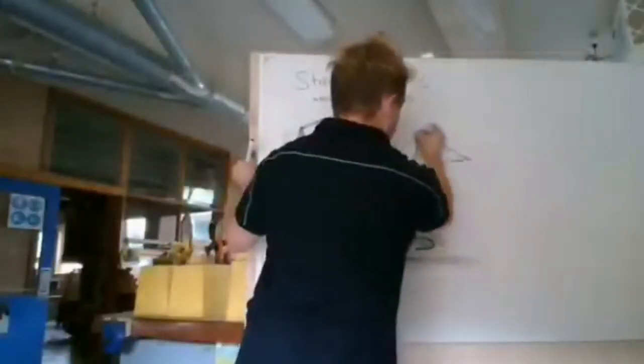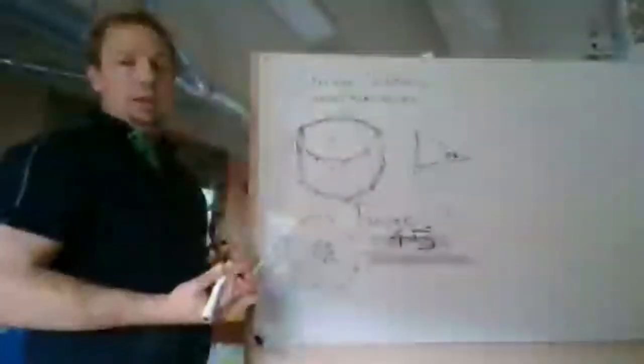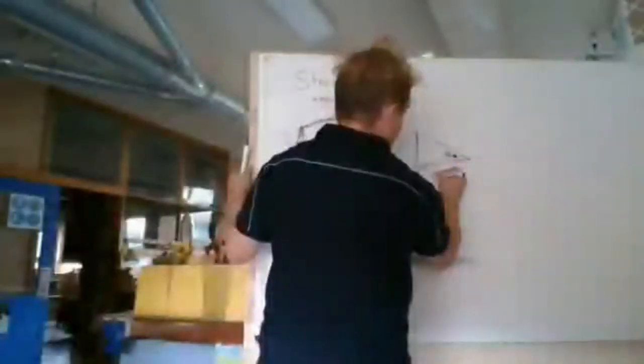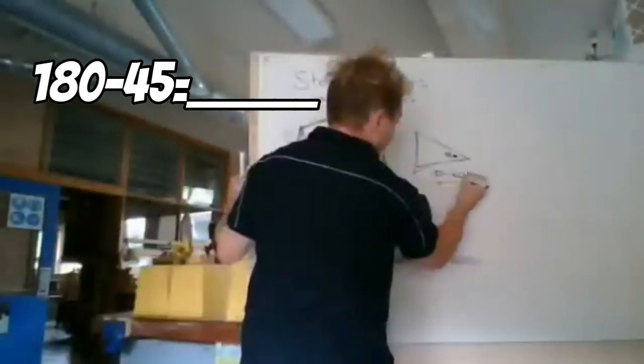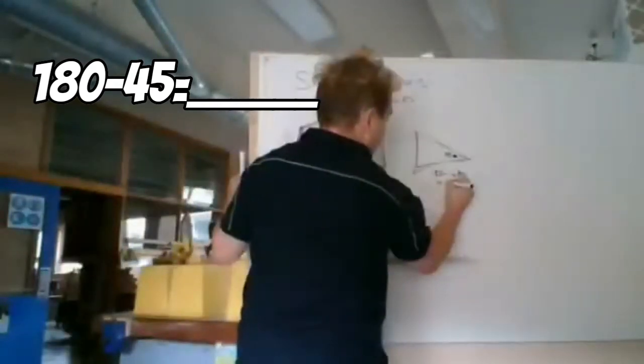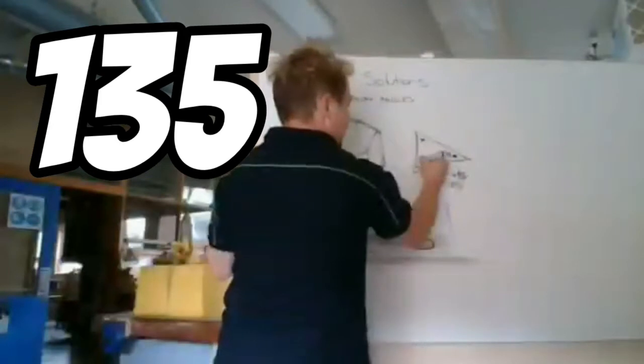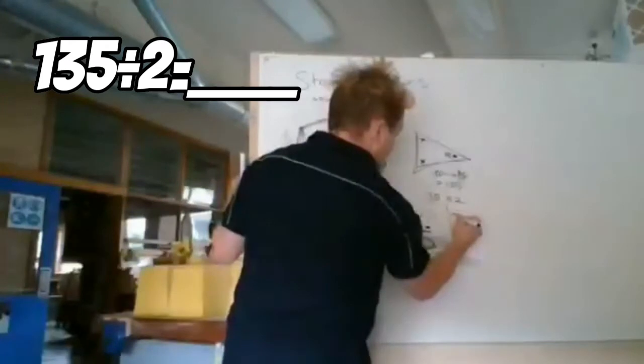All right, we know that that's an isosceles triangle. So this angle is 45 degrees, and there's 180 degrees in all the three angles of a triangle. That would mean that 180 minus 45 is equal to 135, which means that these two corners then equal 135 degrees.